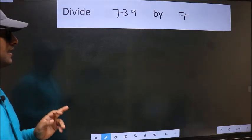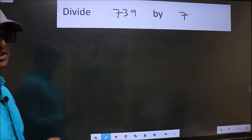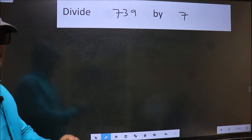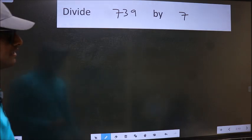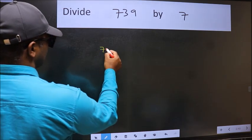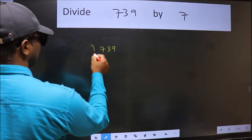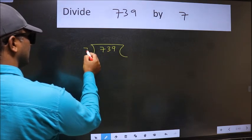Divide 739 by 7. To do this division, we should frame it in this way: 739 here and 7 here.